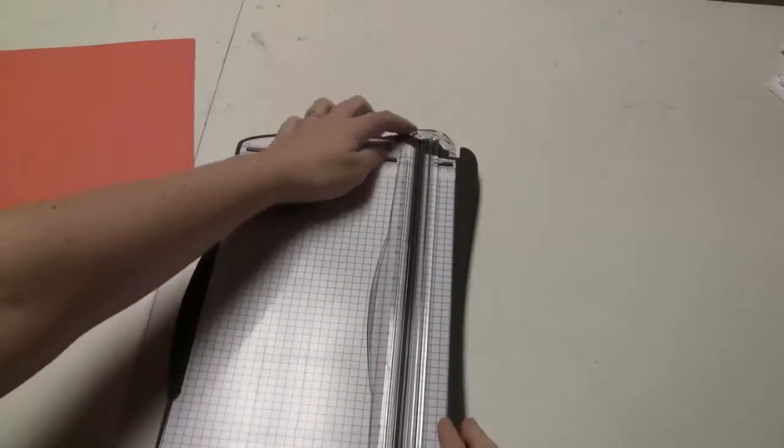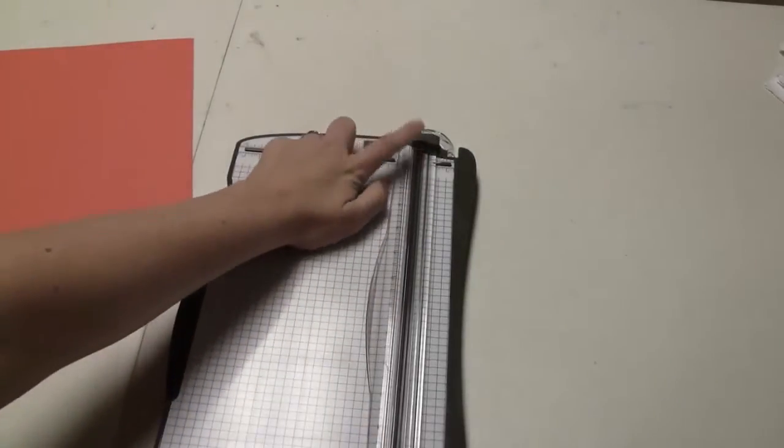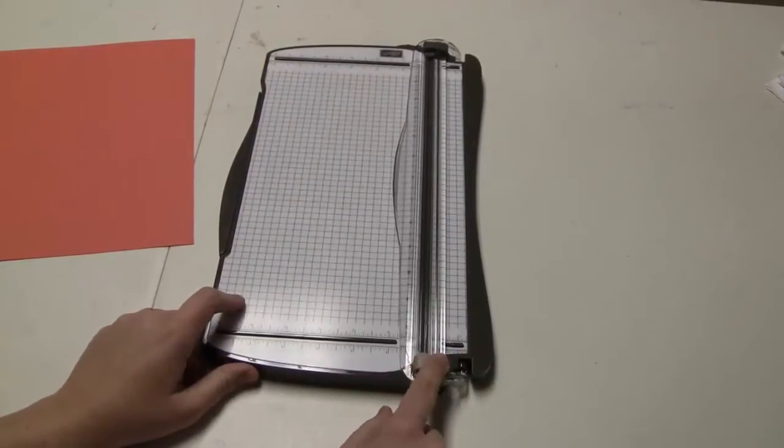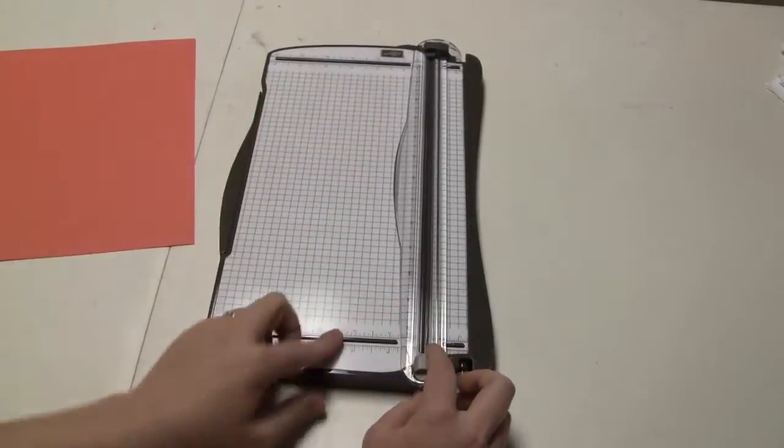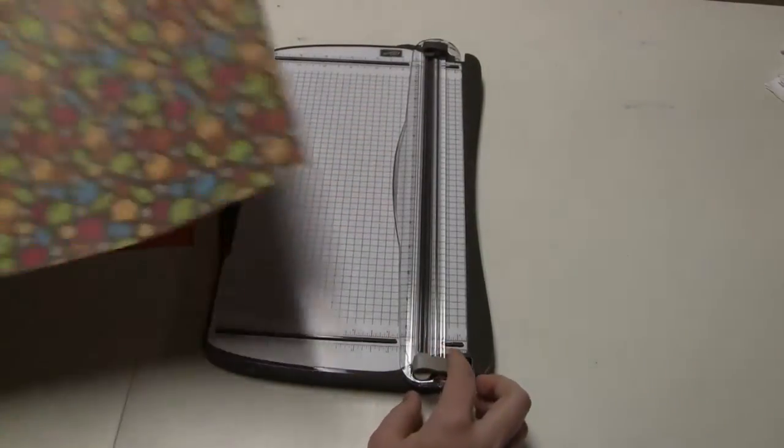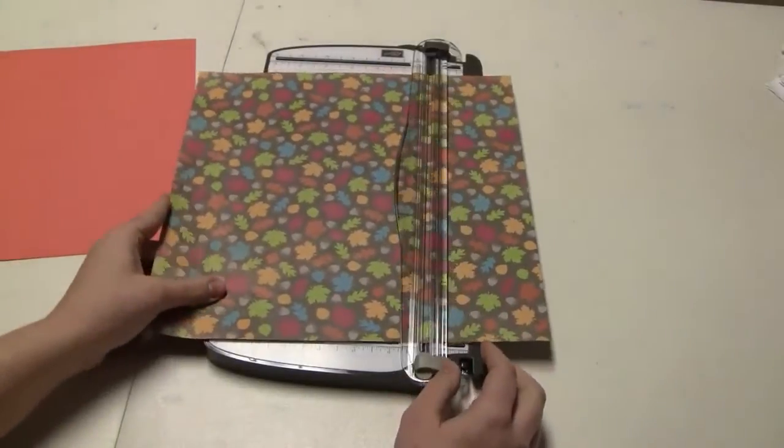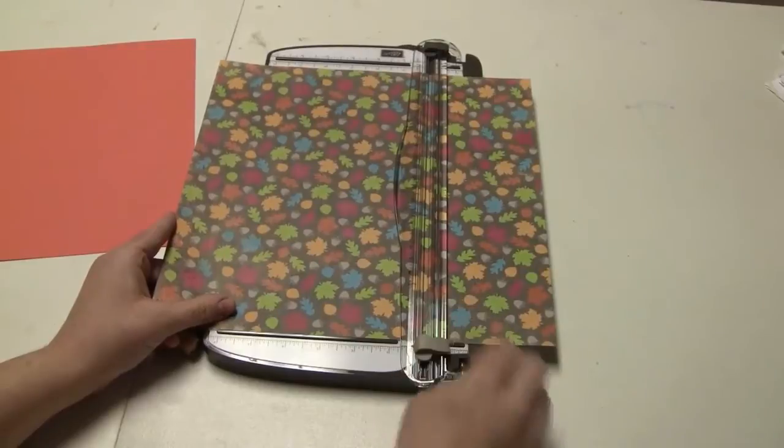The other thing that I really liked about this is that you have a cutting blade—it's the dark blade—and you have a scoring blade, which is this light gray blade. They actually sit all the way off your paper so that if you have a full 12x12 sheet of paper, you can slide it in here and you don't have to worry about these blades getting in the way.